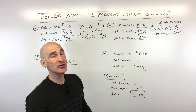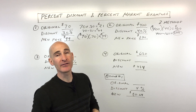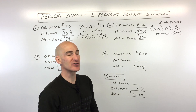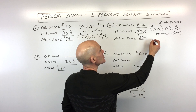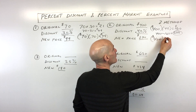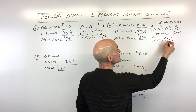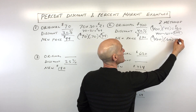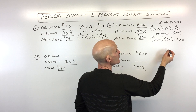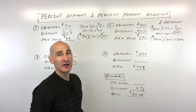For method two, instead of taking 40% off, focus on what you're going to pay — which is 60%. Take $400 multiplied by 0.60, and you get $240. Same answer.